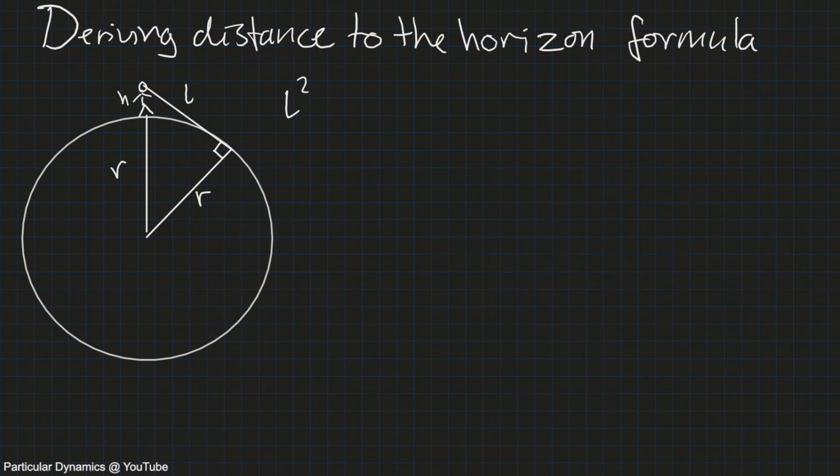We get l squared plus r squared equals r plus h squared. We can expand this and get r squared plus 2rh plus h squared.